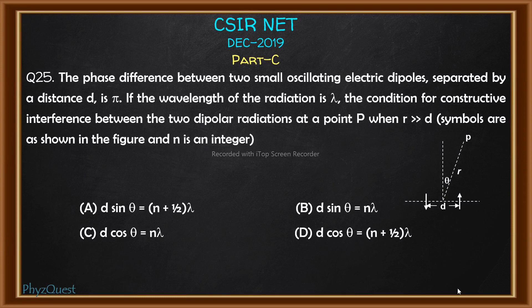Hello, welcome to FizzQuest. This is the solution video for CSIR-NET December 2019 Part C, Question 25. The question is: the phase difference between two small oscillating electric dipoles separated by a distance d is pi. If the wavelength of the radiation is lambda, the condition for constructive interference between the two dipolar radiations at point P, where r is much greater than d, needs to be found. Four options are given and we need to choose the correct one.